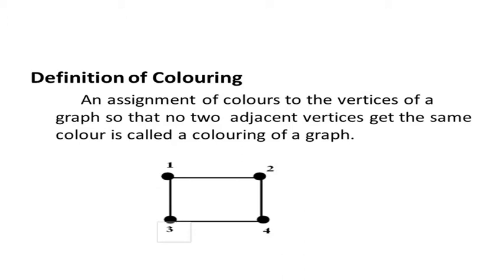Here I am giving an example of a cycle C4. It contains four vertices. There is no restriction on using colors, so we can use up to four colors in this graph. I am assigning the colors 1, 2, 3, and 4.